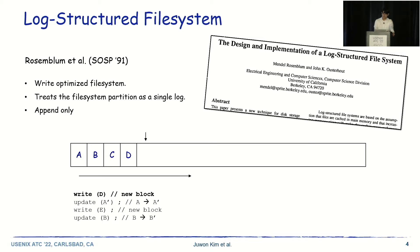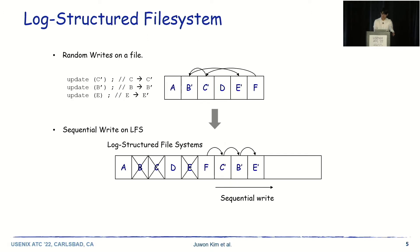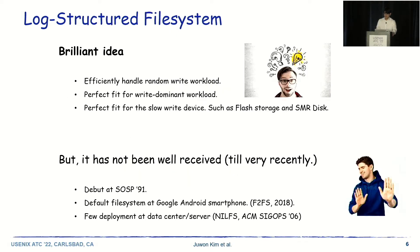For an update of block A to A', A' is appended and A is invalidated. Likewise, the log-structure file system appends new blocks at the end of the log. The log-structure file system converts random writes on a file into sequential writes. The block is appended at the end of the log regardless of the block's index in a file. This append-only nature enhances write performance by avoiding seek operations on disk. Likewise, the log-structure file system efficiently handles random write workloads.